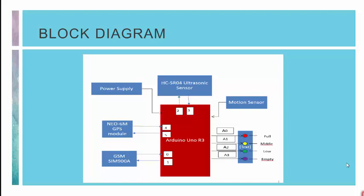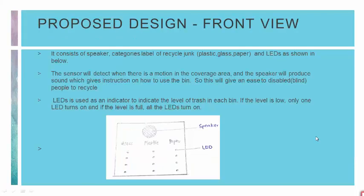We have LEDs to indicate the level of garbage. We have red, yellow, green, and purple. Red indicates full, yellow indicates middle, green indicates low, and purple indicates empty. Pin A0 corresponds to full, A1 to middle, A2 to low, and A3 to empty.